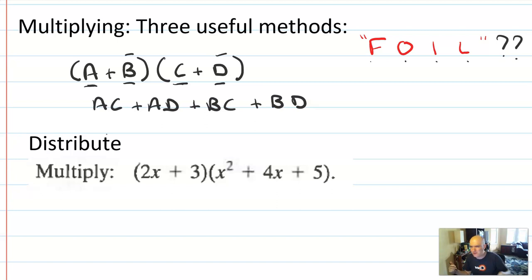So you can do them in any order you want. It doesn't have to be that way. And two, first, outer, inner, last, as a mnemonic, only works if you have four terms. And just beneath you, you can see, what if you have six terms? What do you do with those other things? So FOIL is actually not a very good way to use.